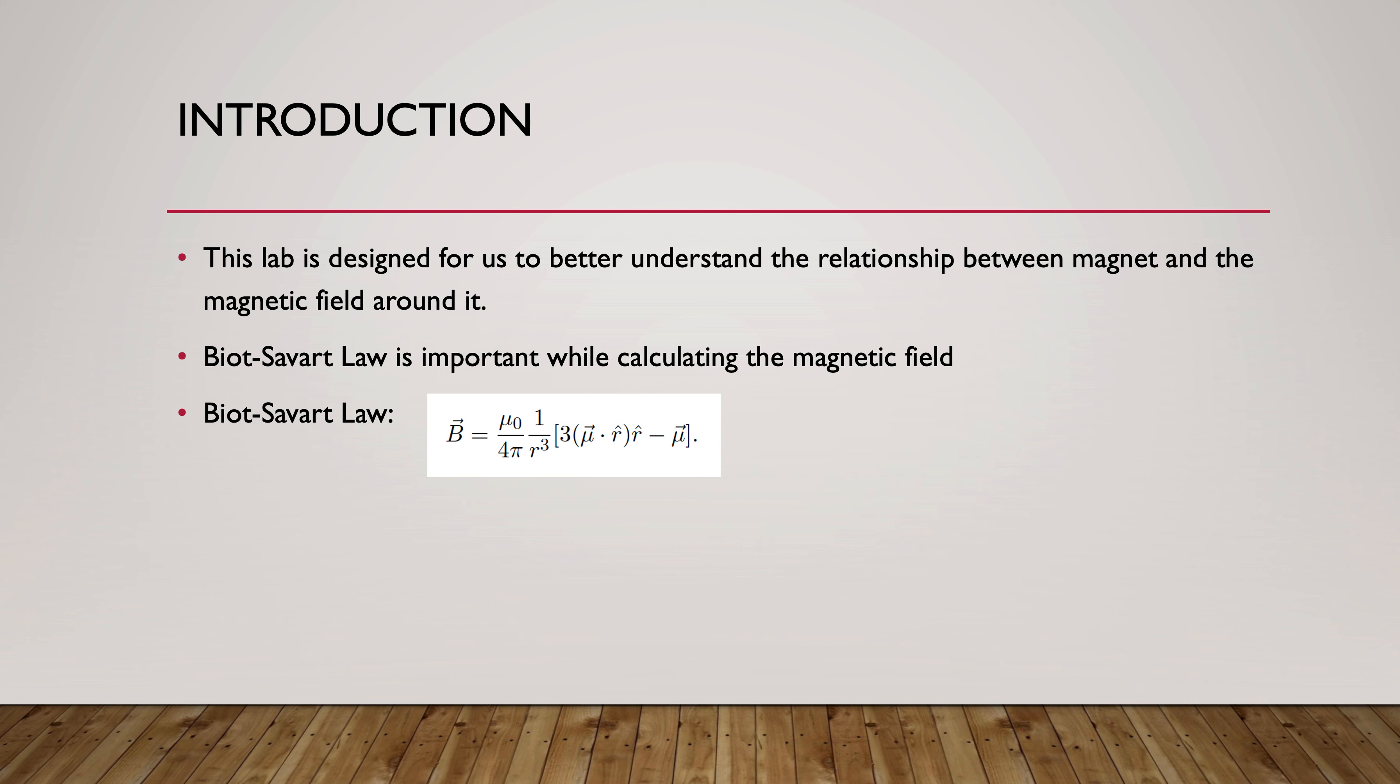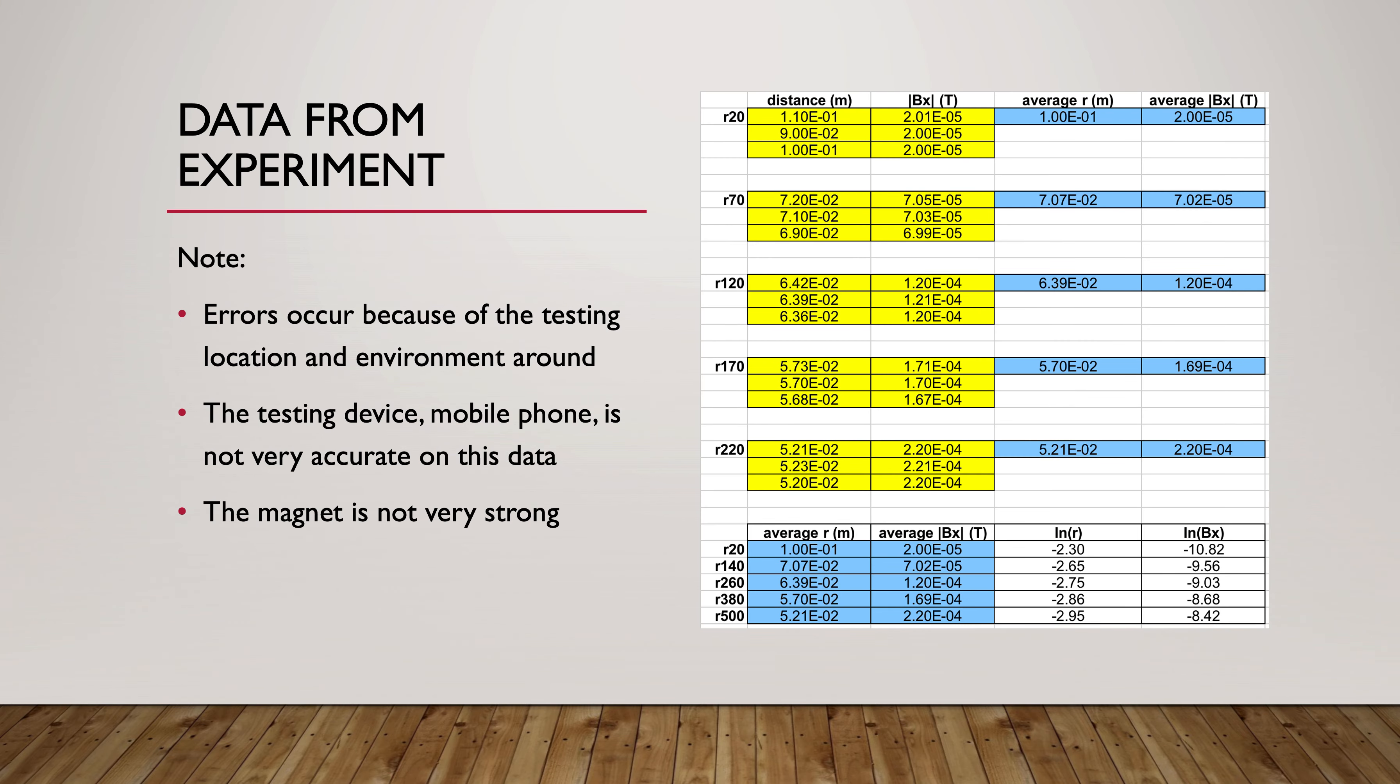That's what we are given in our lab report sheet. This is the data from my experiment. When testing, we find our r equals 20, 70, 120, 170, and 220, and we calculate our distance.